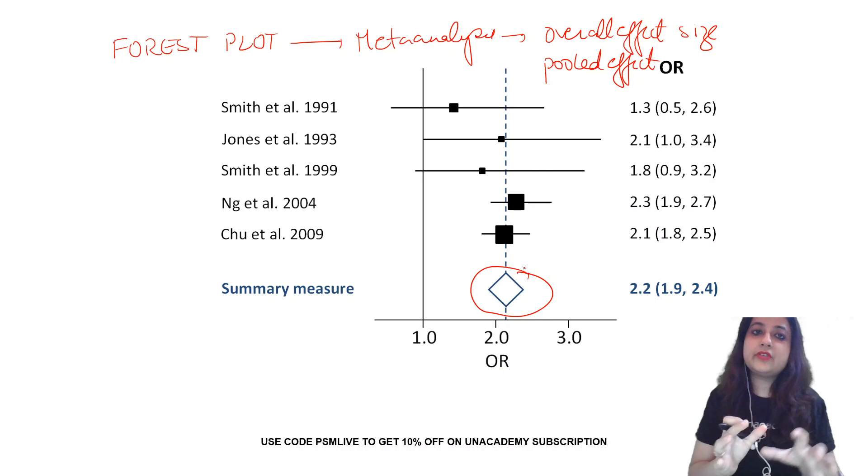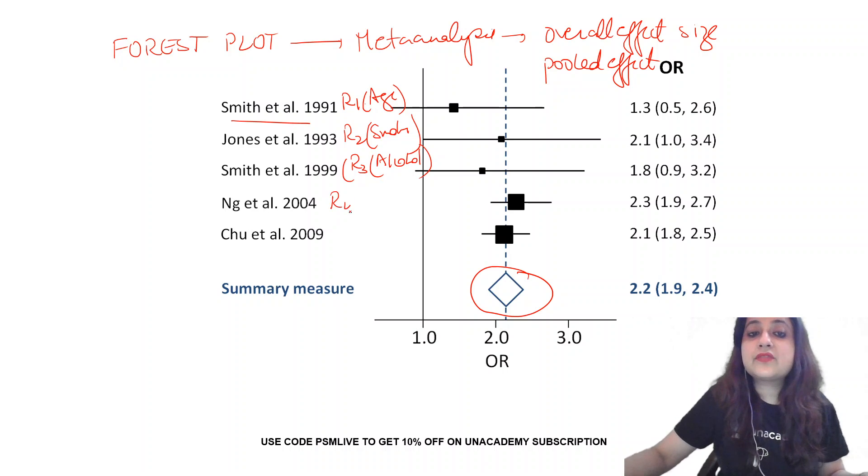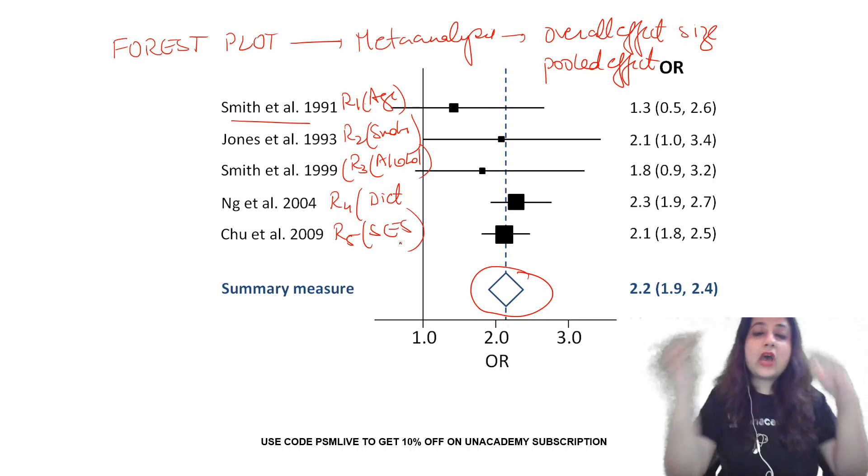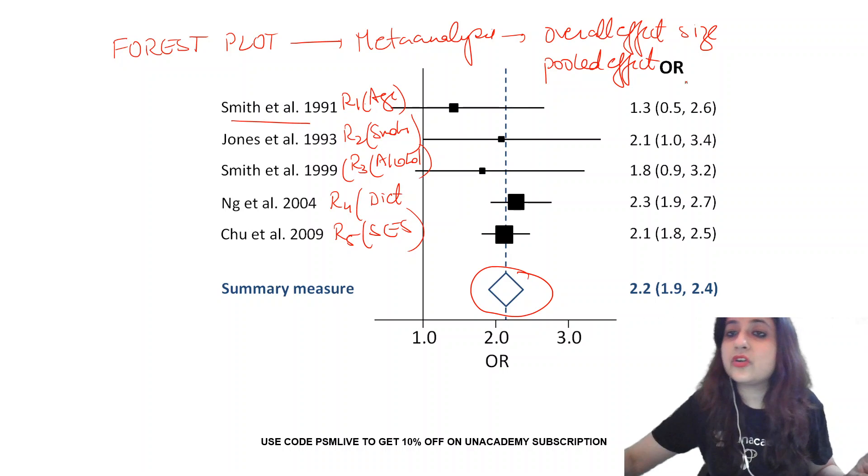Suppose I want to study various risk factors and its association with breast cancer. In one study, Smith et al., I am studying risk factor 1, which is age. In Jones et al., I am studying risk factor 2, smoking. In the third one, risk factor 3, alcohol. In the fourth one, risk factor 4, diet. And in the fifth, socioeconomic status. I want to see whether these factors are significantly associated with breast cancer or not.